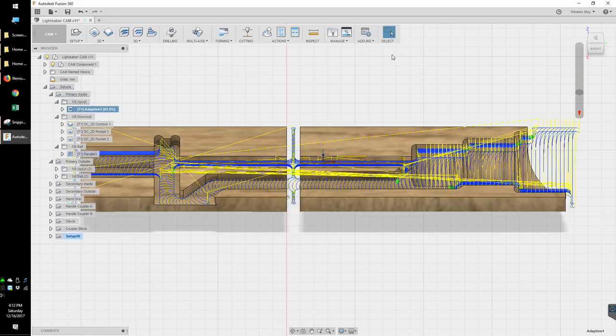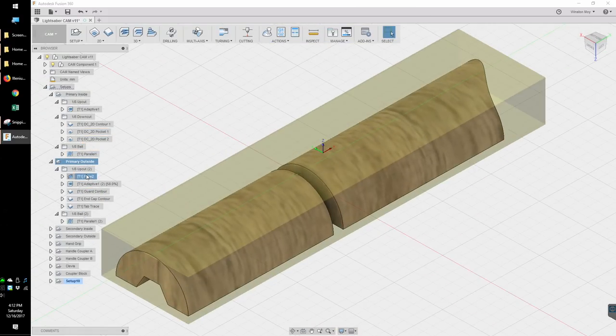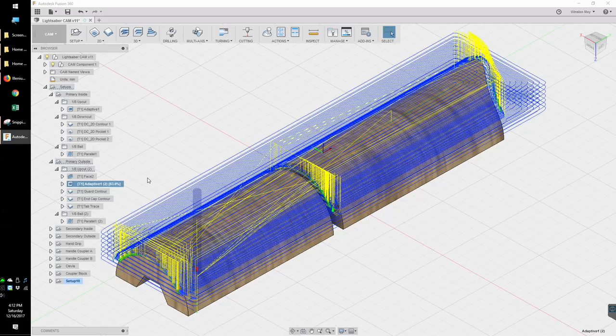I'm going to save the deep dive into two-sided machining and my CAM toolpathing strategy for another video in the near future, but the basic gist is that in order to machine these parts, I needed to be able to precisely locate each part after I flipped it over, and the best way to do that was with indexing pins.